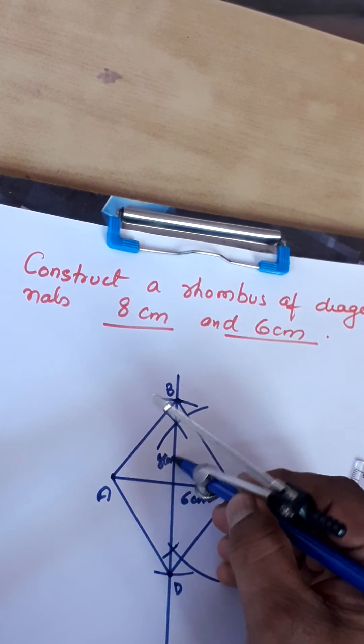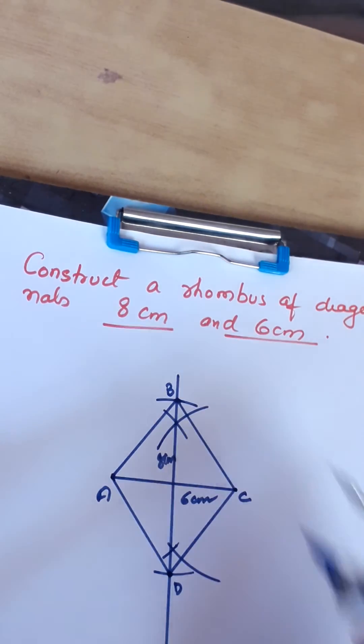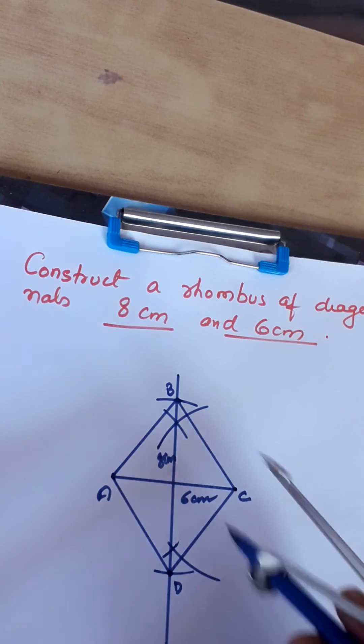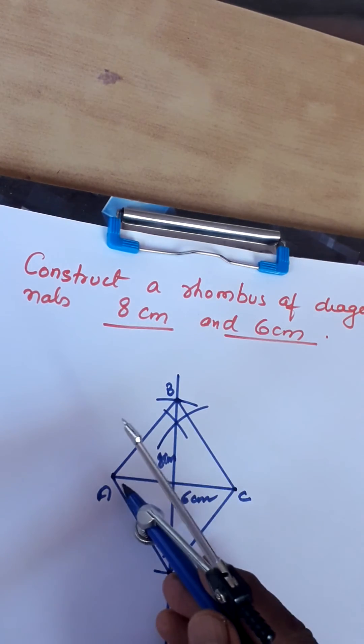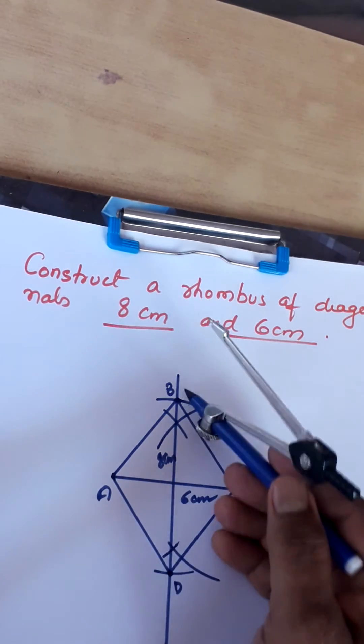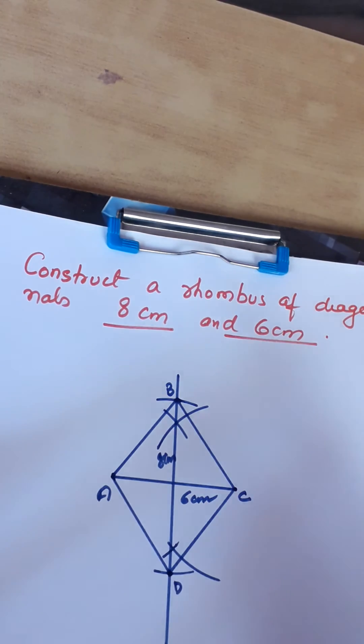We have got a rhombus whose diagonals are of measure 6 centimeter and 8 centimeter. We can draw any rhombus like this.